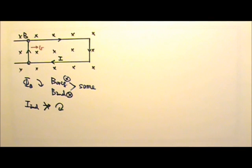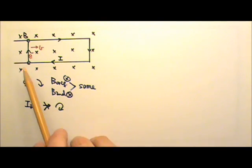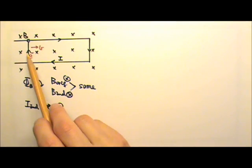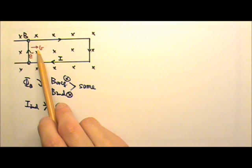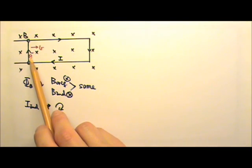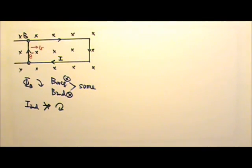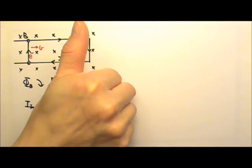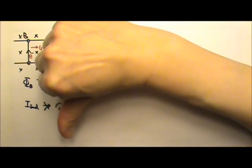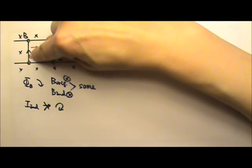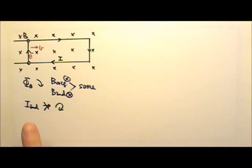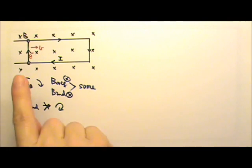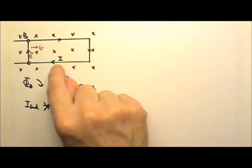Another way to find the direction of the induced current is to consider the free electrons in the conducting bar. When the bar is pulled to the right, free electrons move to the right with it, so there is a magnetic force on these moving charges. Doing V cross B, and flipping the direction because electrons are negatively charged, the force pushes electrons downward, meaning the conventional current flows upward in the bar — which is clockwise.